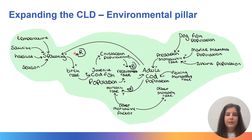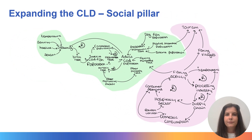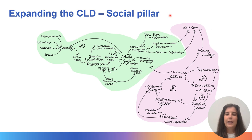You can also see how there are reinforcing feedback loops and balancing loops. Since we're considering the socio-economic and environmental pillars of sustainability, this slide has expanded the system to include the social part, so we can also see the connections between the environmental pillar and the social pillar.